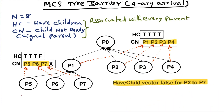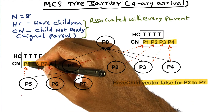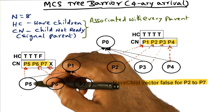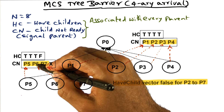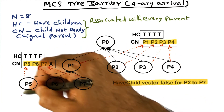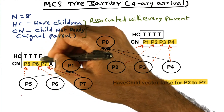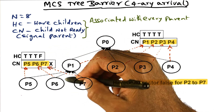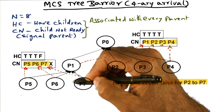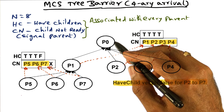The algorithm for barrier arrival works like this: when each processor arrives at a barrier, it reaches into the parent's data structure at a specific, statically determined spot. It's statically determined that P5 signals to the parent at its assigned spot, P6 at its spot, and P7 at its spot. Once all children have arrived, P1 can check whether its child-not-ready vector has ones in all relevant positions. If so, it knows its children have arrived, and it can then move up the tree, similar to the vanilla tree barrier.